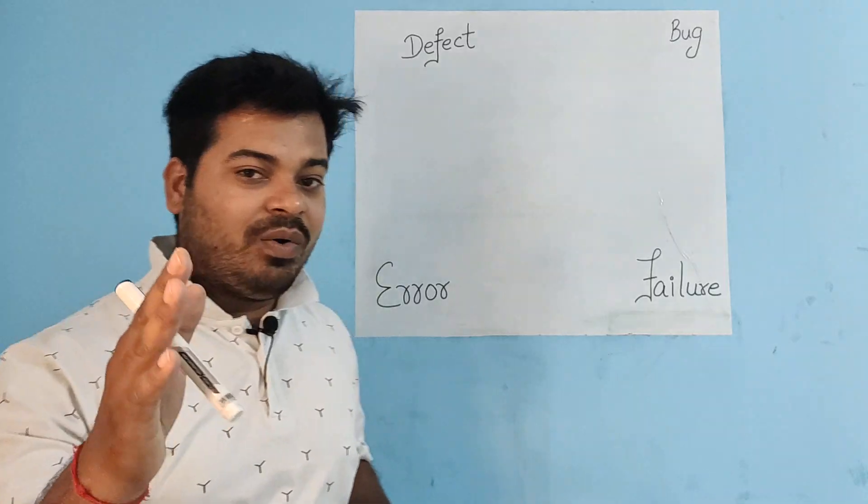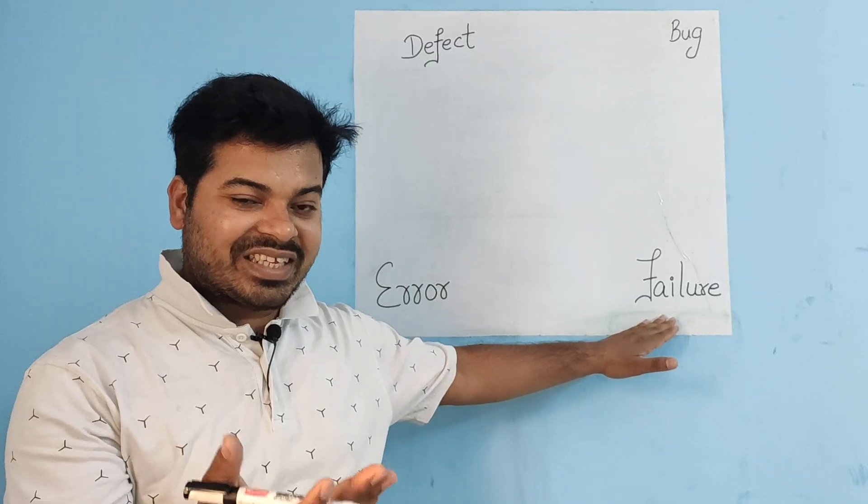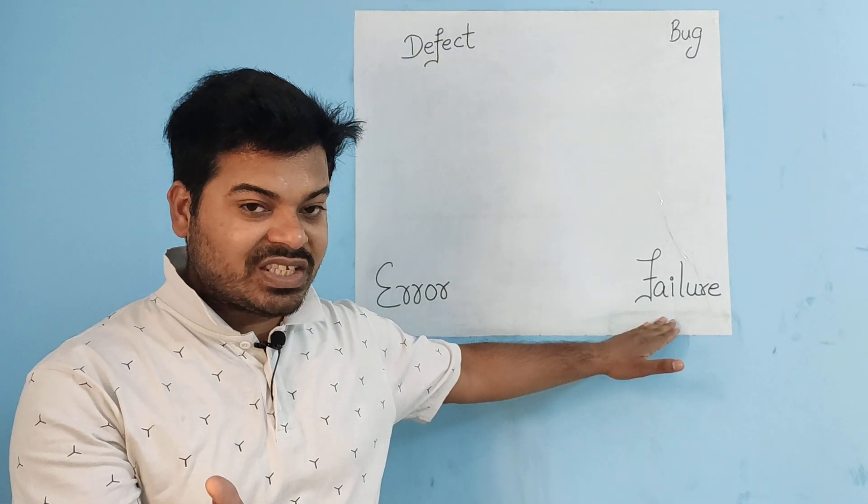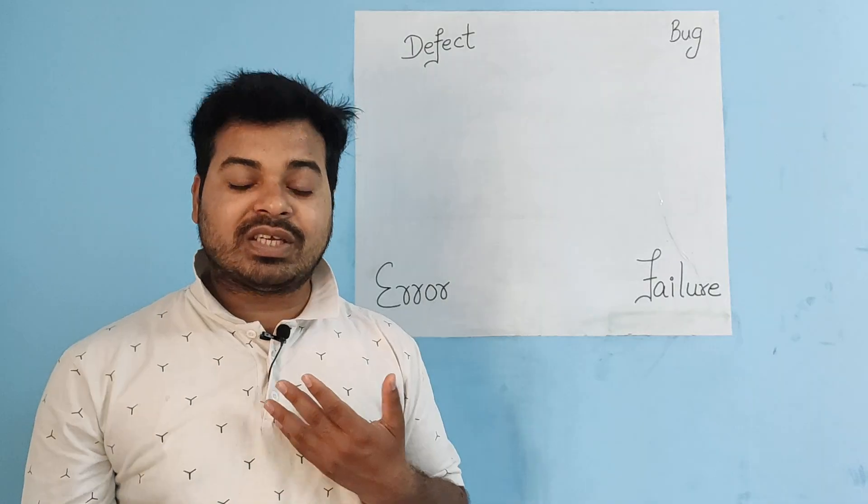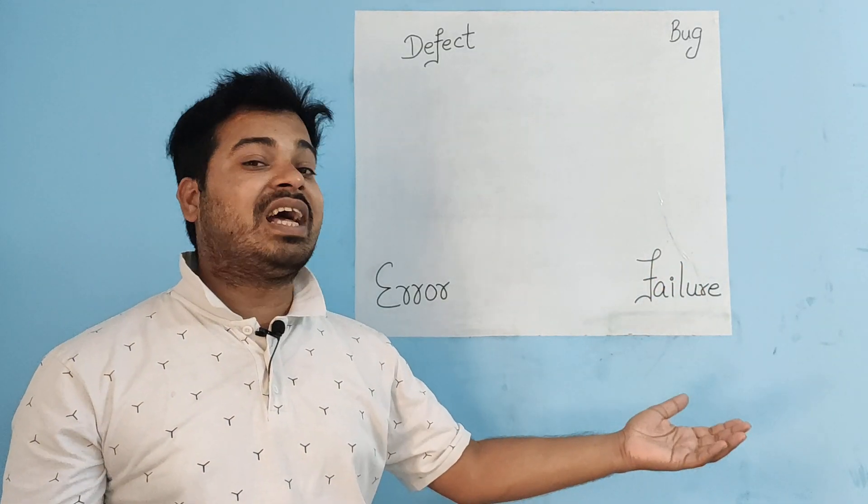Now let's talk about what do you mean by failure. Once the software is ready, it is tested and verified by our testers, and finally the end user or customer is facing some issue in production. That time it is called a failure.